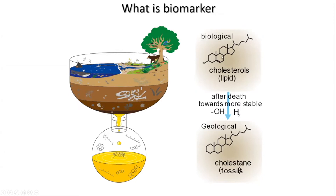Biological cholesterol converts into a different form in the geological record. What happens is that cholesterol has one hydroxy group and one double bond, and these two functional groups are unstable. After burial in sedimentary rocks, the hydroxy group is released and the double bond is reduced. So what we find from cholesterol in geological records is a form with no hydroxy group and no double bonds. If we find this in sedimentary rocks, we can say there was a eukaryotic organism at the time of deposition.